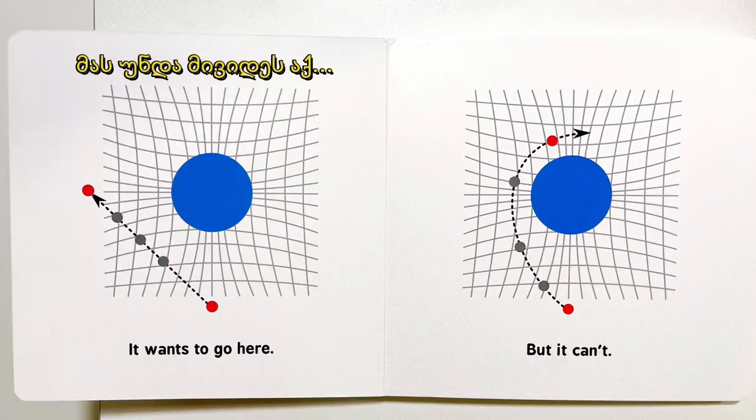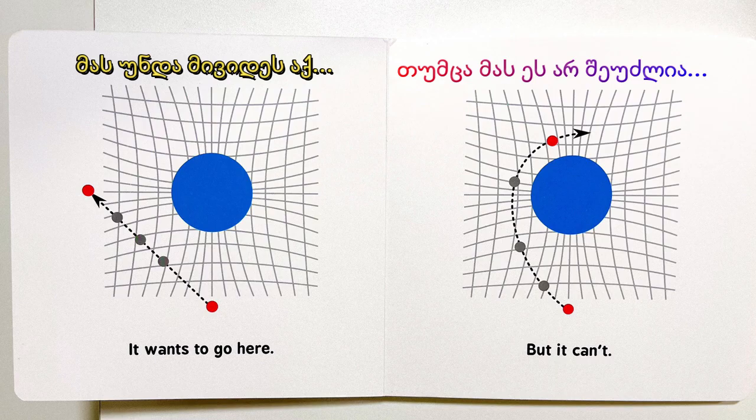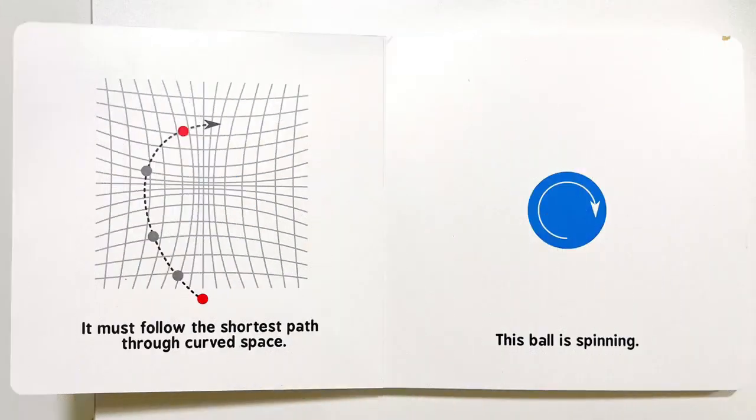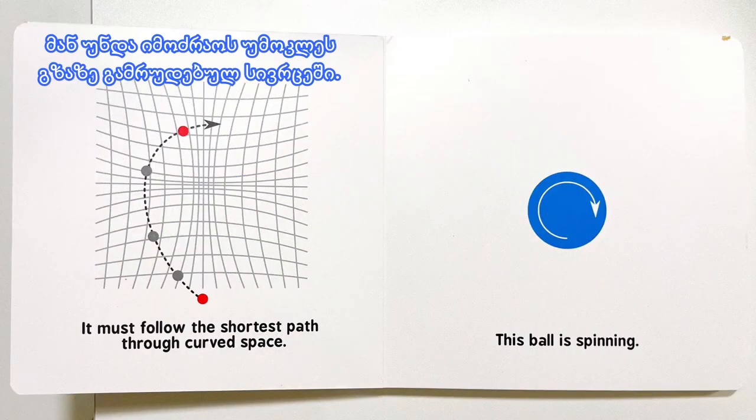It wants to go here, but it can't. It must follow the shortest path through curved space.